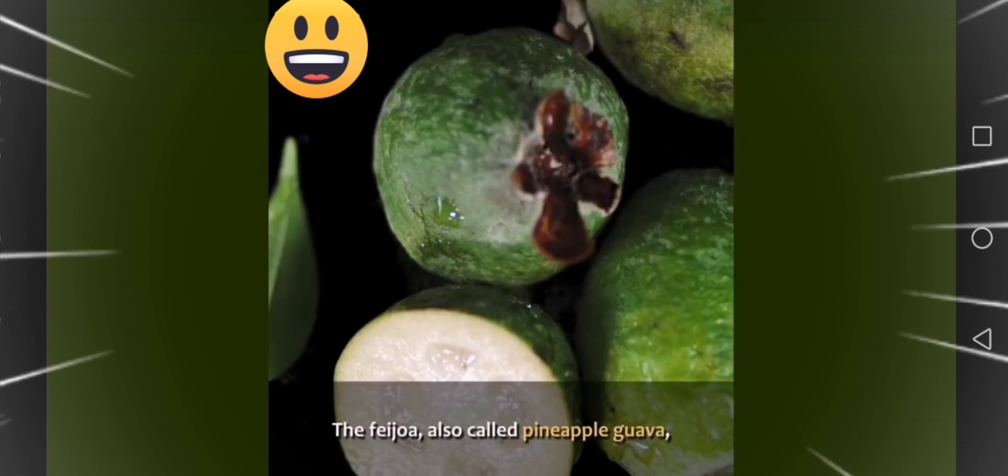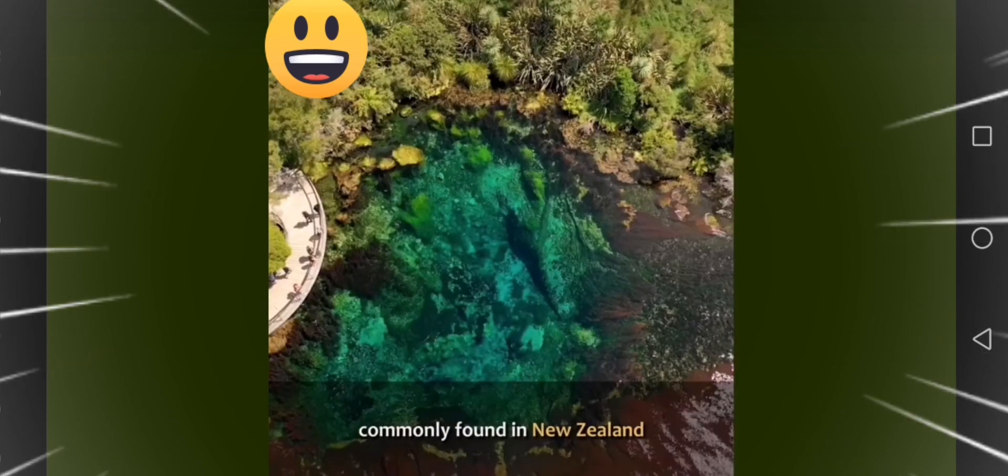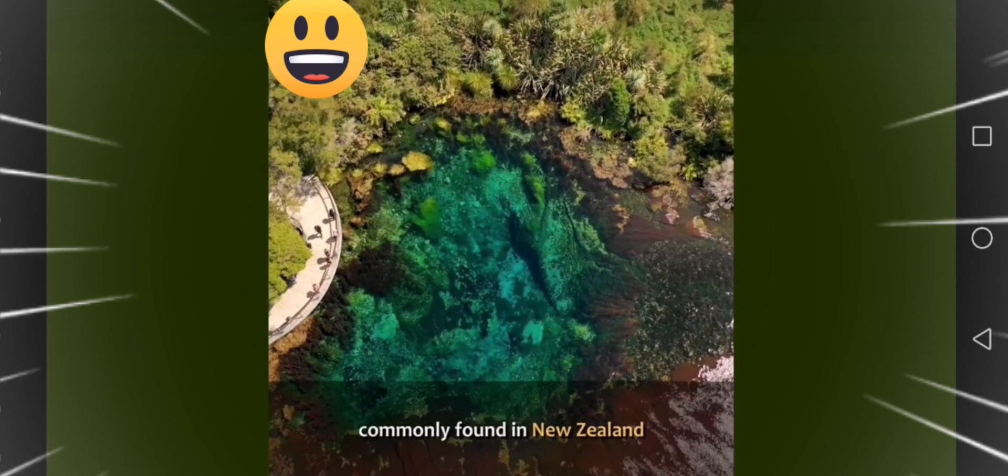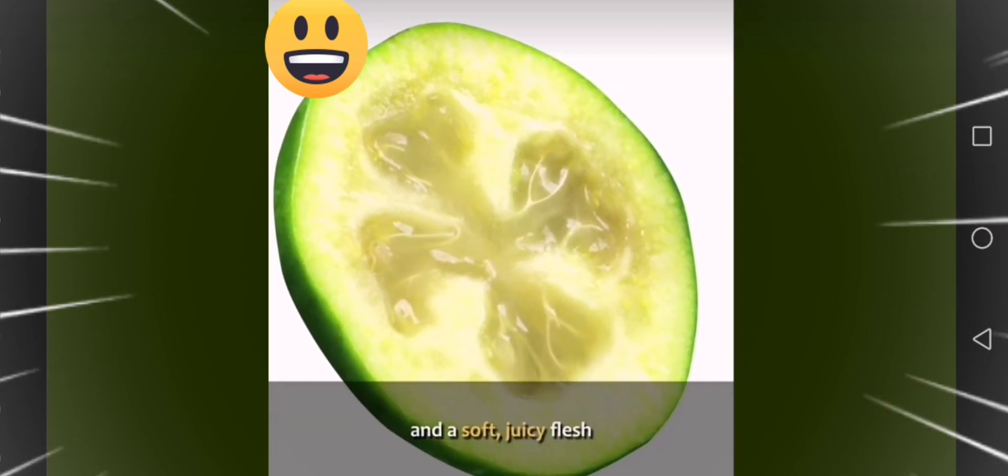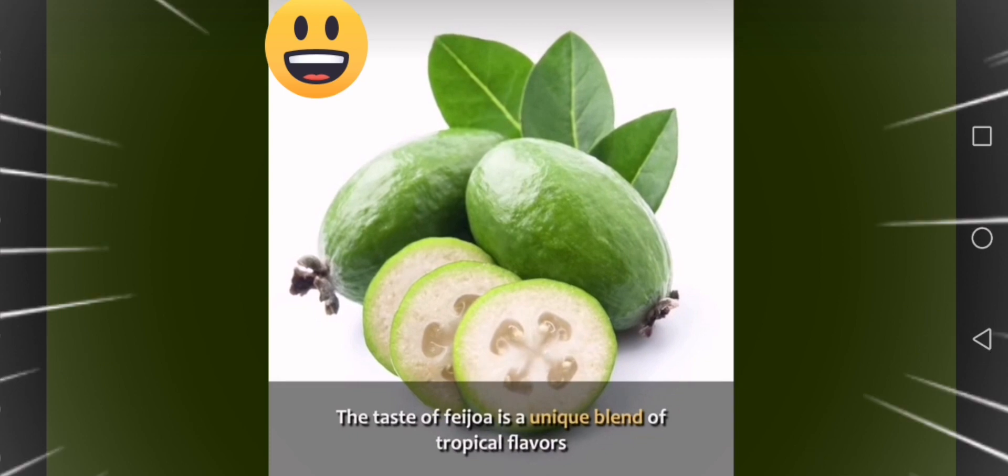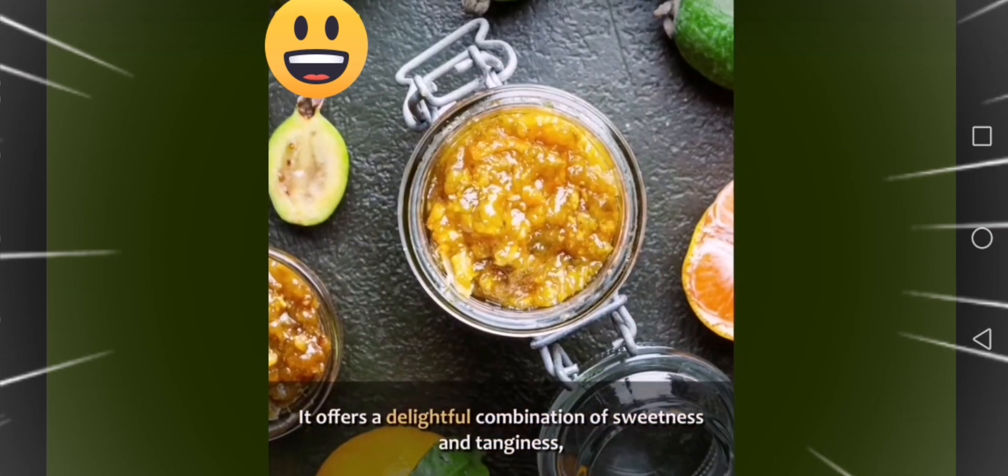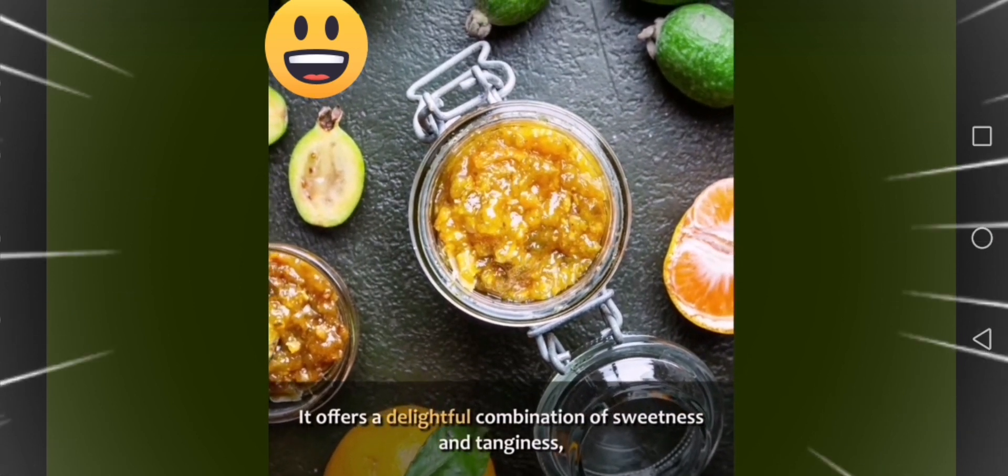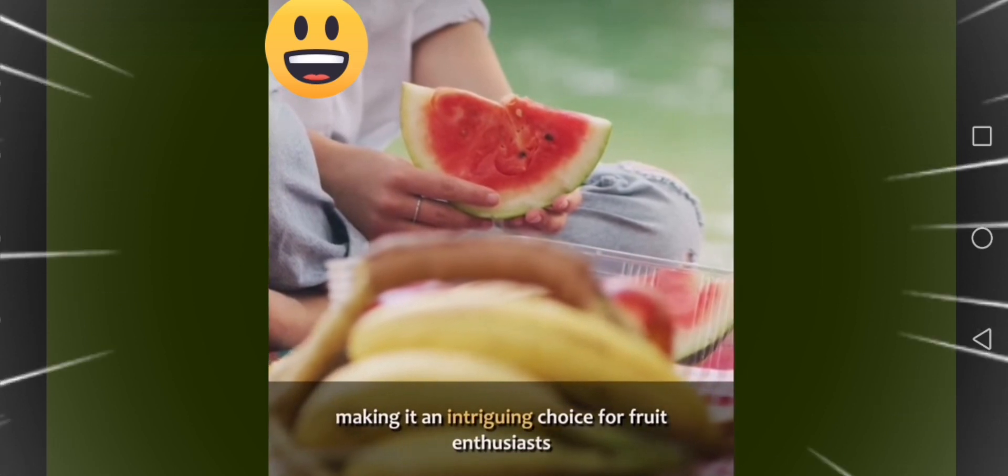Eight, feijoa. The feijoa, also called pineapple guava, is a fruit native to South America but commonly found in New Zealand. It has a green, egg-shaped exterior and a soft, juicy flesh. The taste of feijoa is a unique blend of tropical flavors reminiscent of pineapple, guava, and strawberry. It offers a delightful combination of sweetness and tanginess, making it an intriguing choice for fruit enthusiasts.